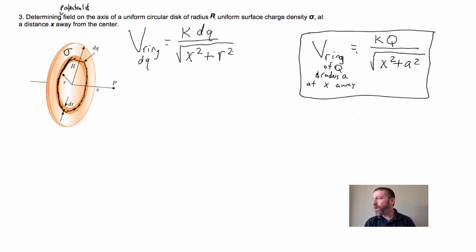So we want to integrate that over this entire disk, but first we need to find an expression for DQ. DQ, the charge of this infinitesimally thin ring is what? Well, it's going to be sigma, the surface charge density, times DA. This is the area of this ring.